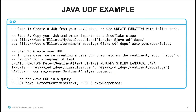Let's take a look at an example of a Java UDF. The first thing you'll do when you want to create a Java UDF is create a jar from your Java code, or you can use a create function statement with inline code if it's simple. Once you've created your jar, you can copy it and other imports to a Snowflake stage. You can use PUT commands from SnowSQL, like I've written here, where I copy files from my local machine onto a Snowflake stage. Once I've copied these files, I can create my UDF.